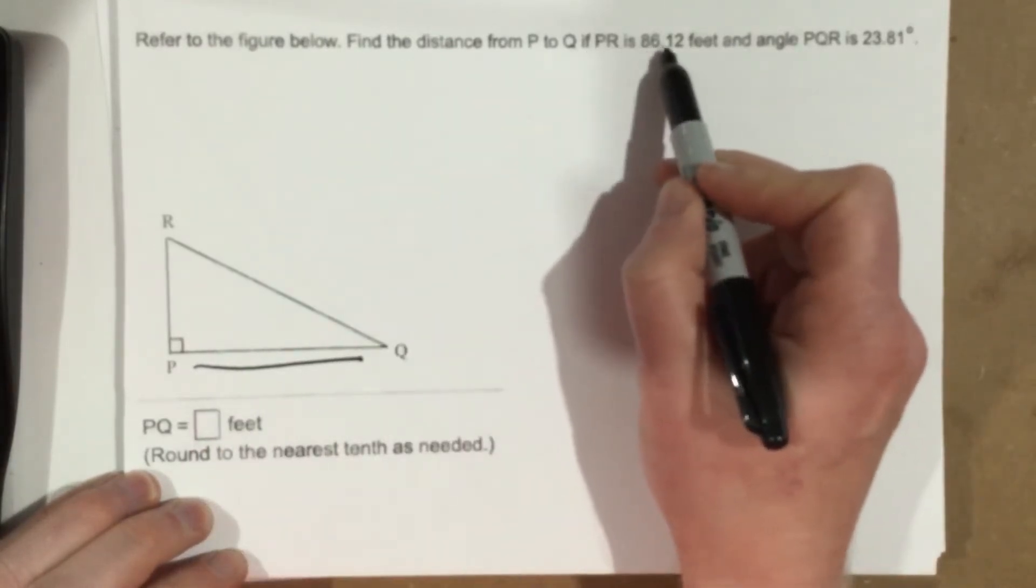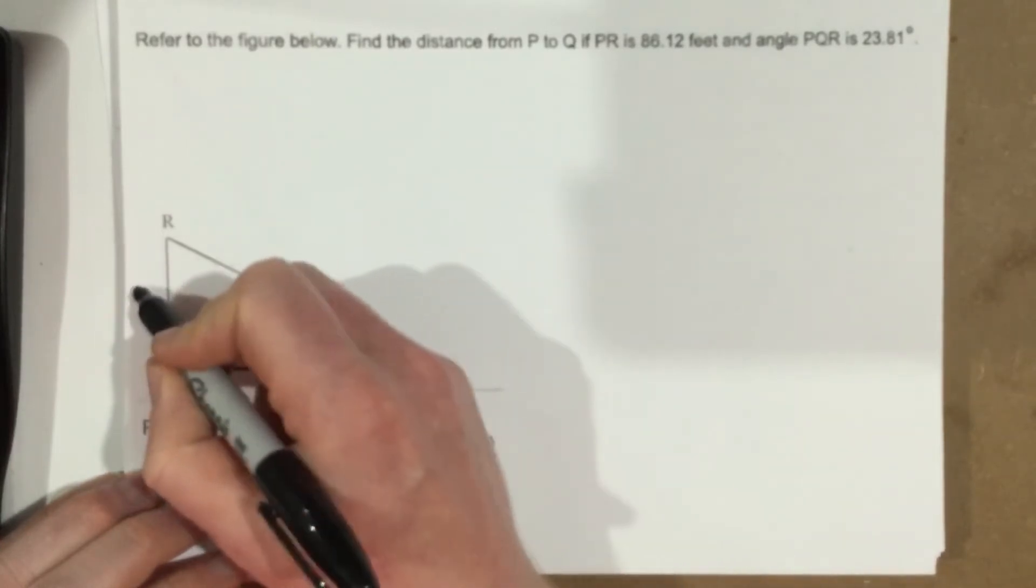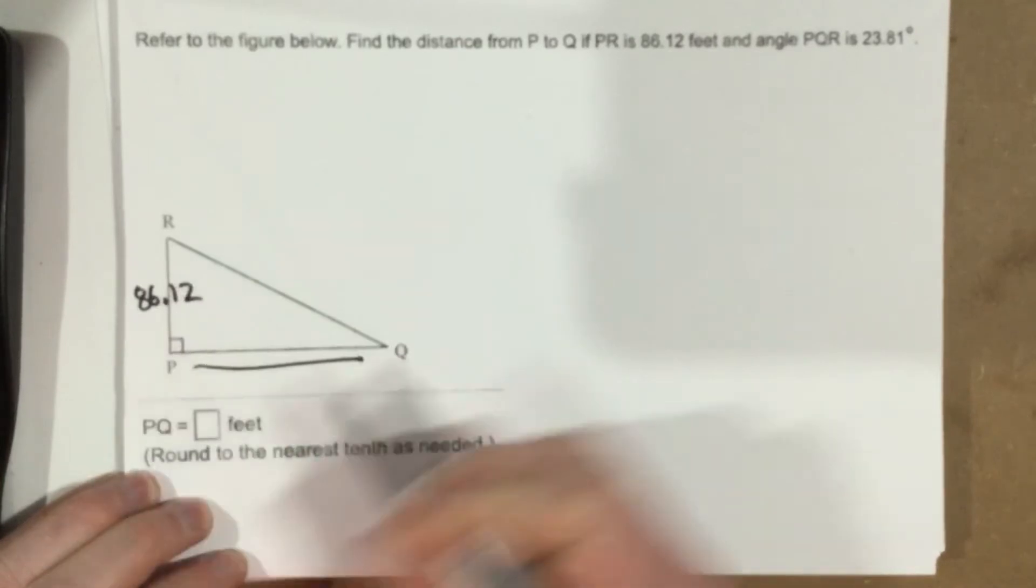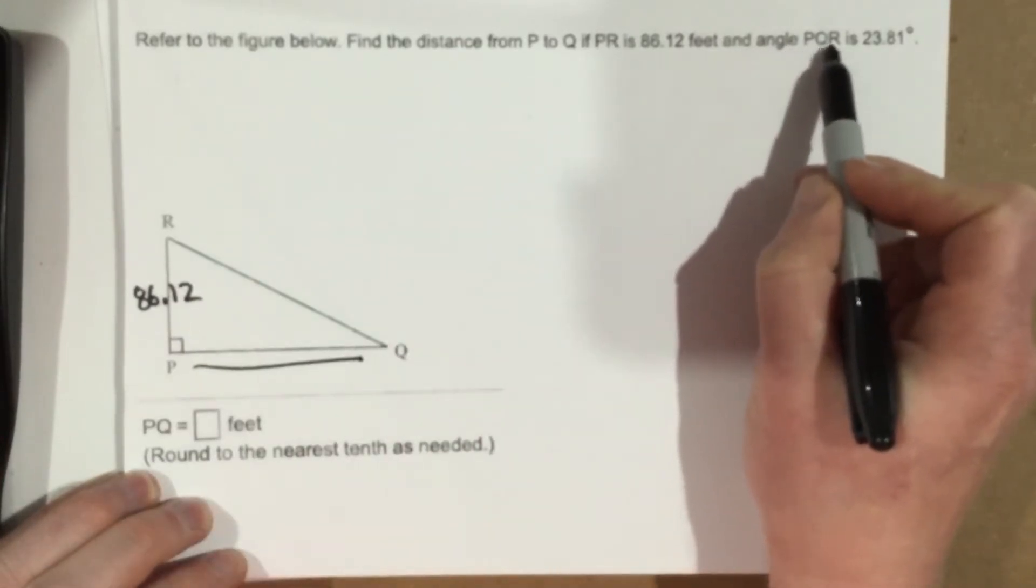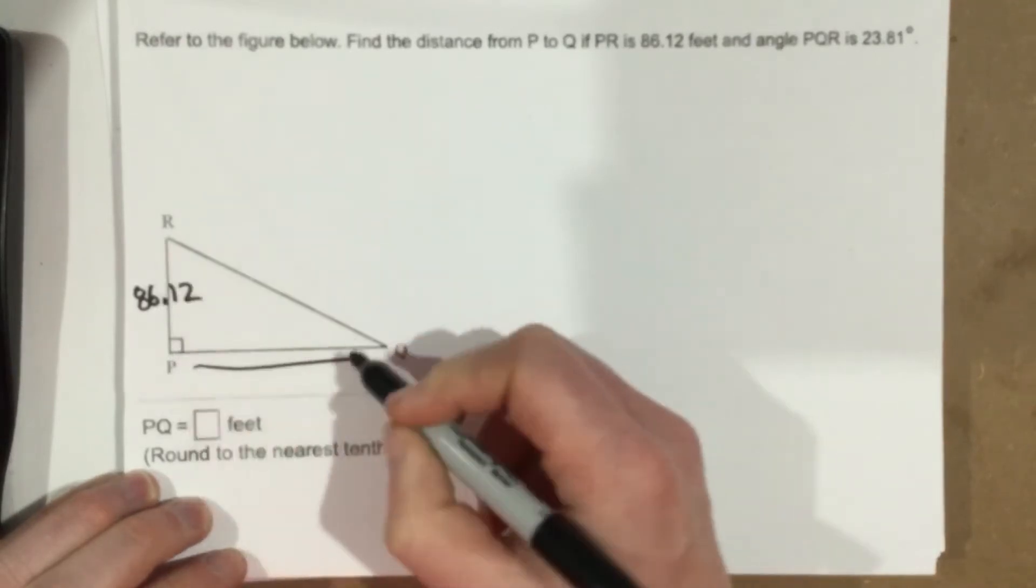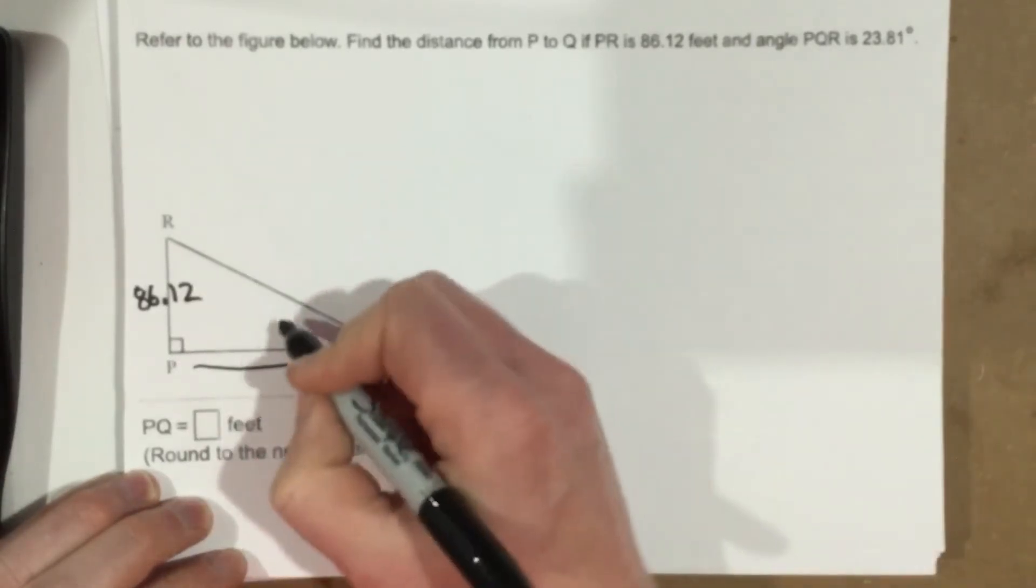If PR is 86.12, so PR 86, let's label that 86.12. And the angle PQR, so remember with our geometry here, PQR, so that's this angle here, is 23.81.